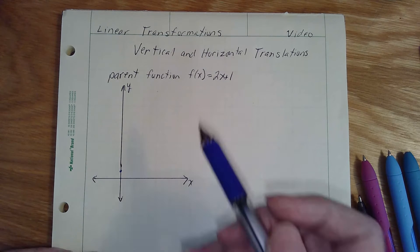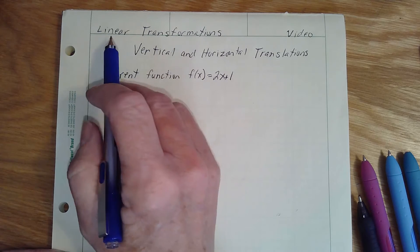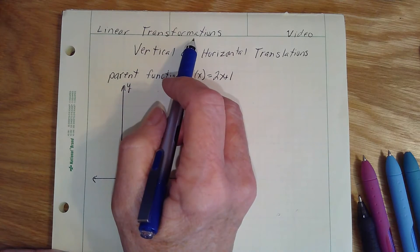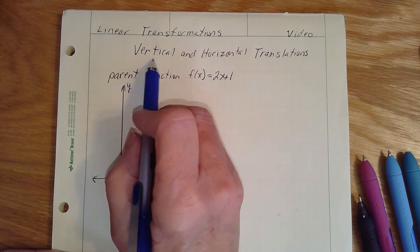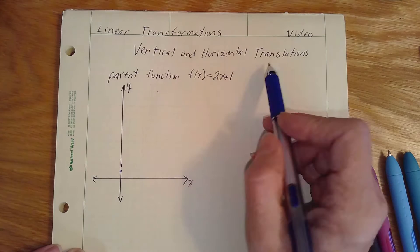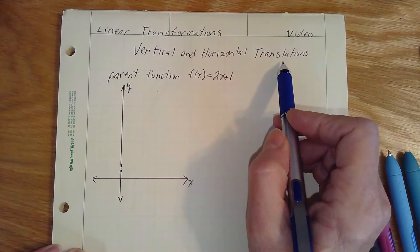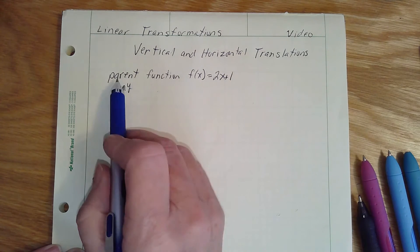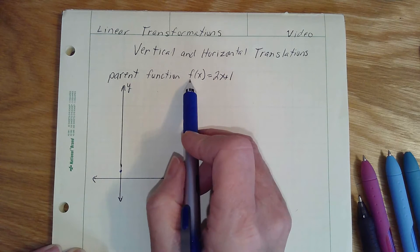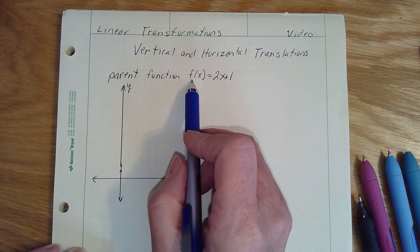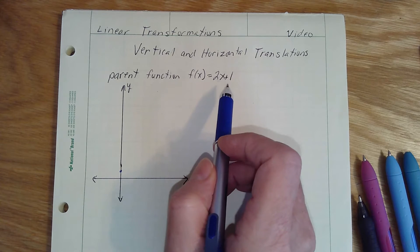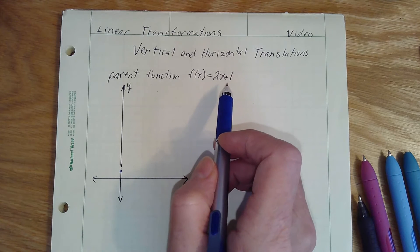Hello. We are going to be looking at linear transformations today, specifically vertical and horizontal translations. We have a parent function f of x — the f simply says it's a function — equals 2x plus 1.